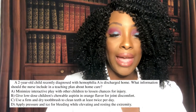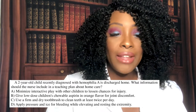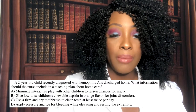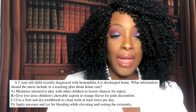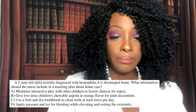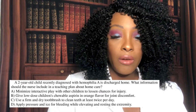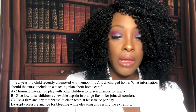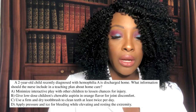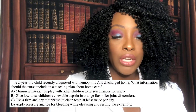Question one: A two-year-old child recently diagnosed with hemophilia A is discharged home. What information should the nurse include in a teaching plan about home care? A) Minimize interactive play with other children to lessen chances for injury. B) Give low-dose children's chewable aspirin in orange flavor for joint discomfort. C) Use a firm and dry toothbrush to clean teeth at least twice per day. Or D) Apply pressure and ice for bleeding while elevating and resting the extremity.